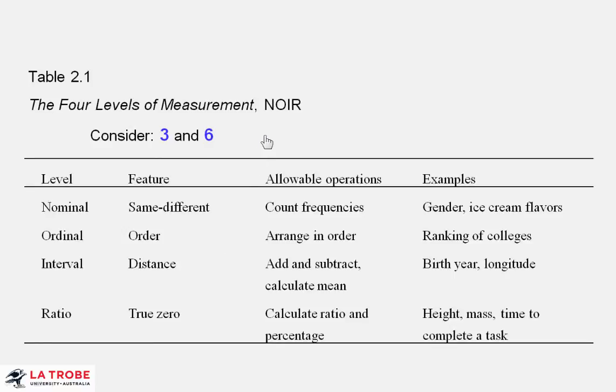The second major issue is measurement. We use numbers to represent things we're really interested in. So a three and a six might represent different levels of anxiety or different amounts of time to complete some task. Whenever we see a number, a data point, we need to bring to mind what does it really represent. And it's the anxiety or the time that we're really interested in, not just this number.